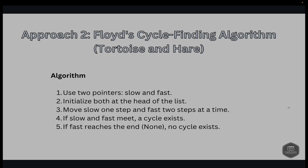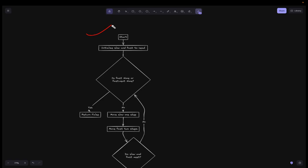Next is Floyd's Cycle Finding Algorithm, also called the Tortoise and Hare algorithm. We use two pointers — slow and fast — both initialized to the head. The slow pointer moves one step at a time, and the fast pointer moves two steps at a time. If the fast and slow pointers meet at some point, there is a cycle. If the fast pointer reaches the end (None), there is no cycle.